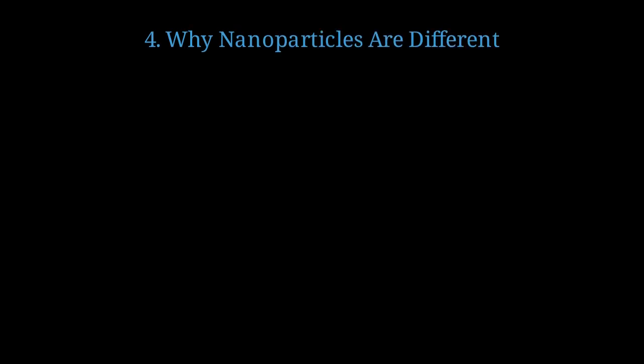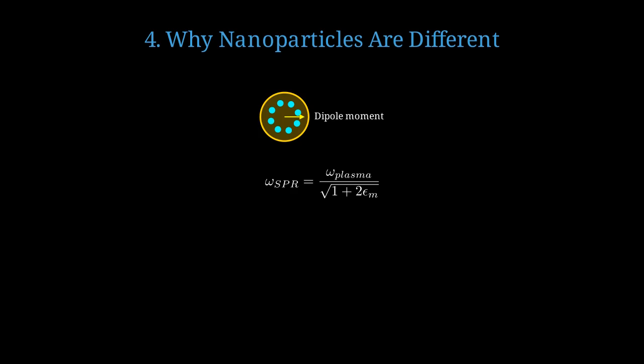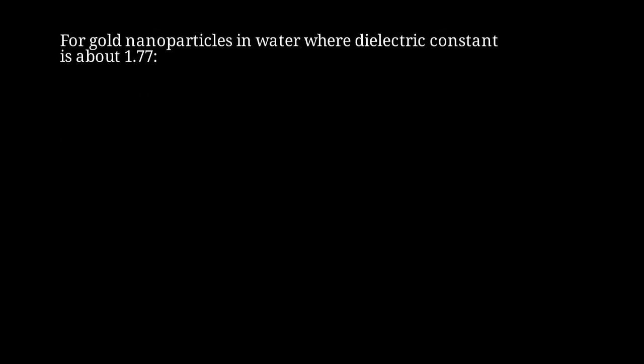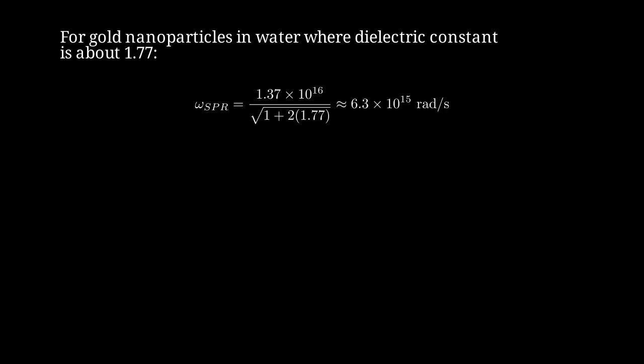Now comes the crucial question: why do nanoparticles behave differently from bulk metals? In nanoparticles, the electrons can't just oscillate freely. They're confined to a small sphere, which creates a restoring force. The electron cloud can shift relative to the positive ionic cores, creating a dipole moment. The surface plasmon resonance frequency, omega SPR, equals omega plasma divided by the square root of 1 plus 2 epsilon m, where epsilon m is the dielectric constant of the surrounding medium. For gold nanoparticles suspended in water, where the dielectric constant is approximately 1.77, we get omega SPR equals approximately 6.3 times 10 to the 15 radians per second.